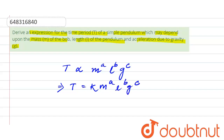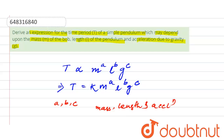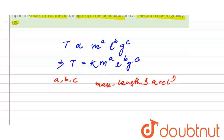Here k is the non-dimensional constant, and a, b, c are respectively the powers or dimensions of mass, length, and acceleration due to gravity. So for the time period of a simple pendulum, a, b, and c are the exponents we need to find.